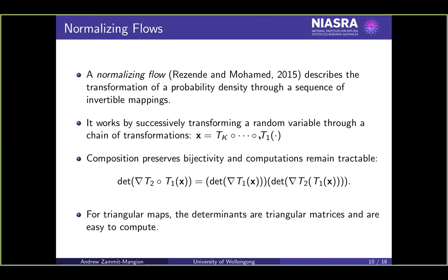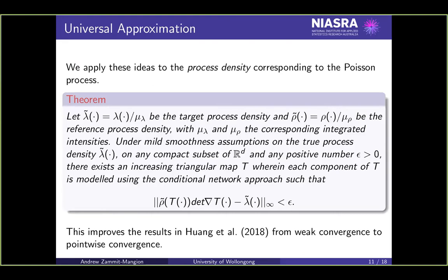These increasing triangular maps are fantastic to work with because the Jacobian will be lower triangular or upper triangular, depending on how you want to define your mappings. This gives us lots of nice properties when computing. For example, the determinant of the Jacobian of the composition is simply the product of the individual determinants of the Jacobian. So actually, even though there are lots of neural networks and lots of optimizations to do, it's actually quite nice to compute with these things.